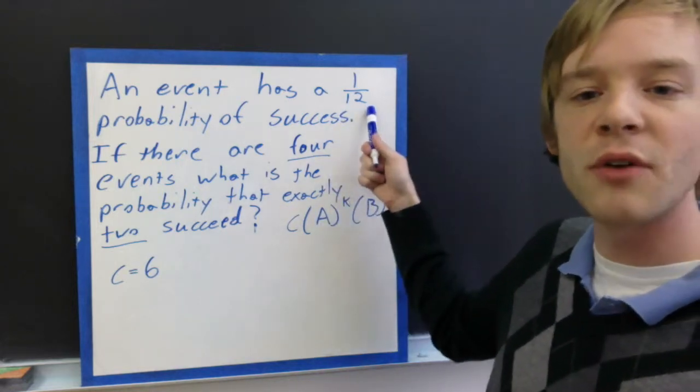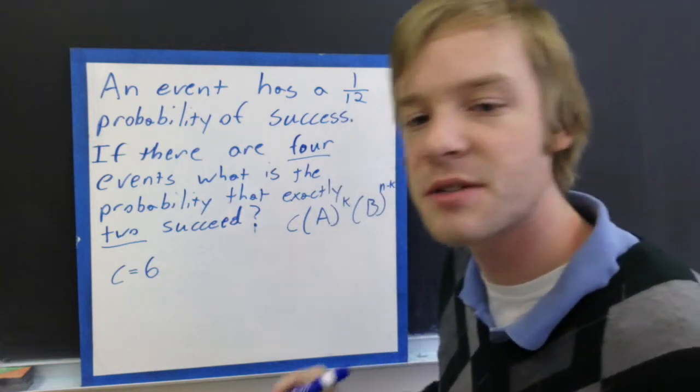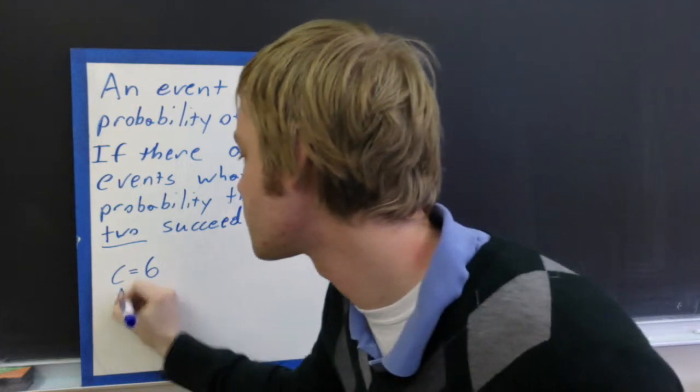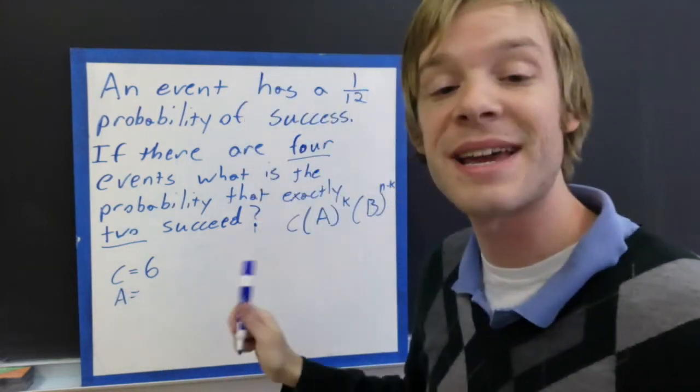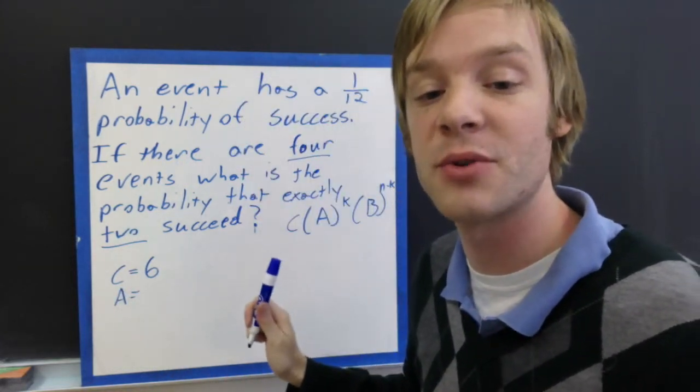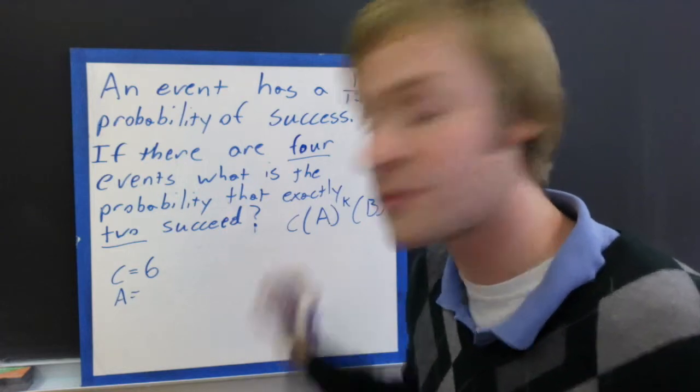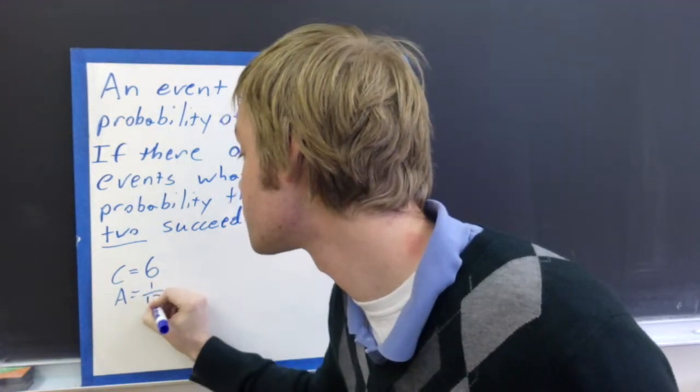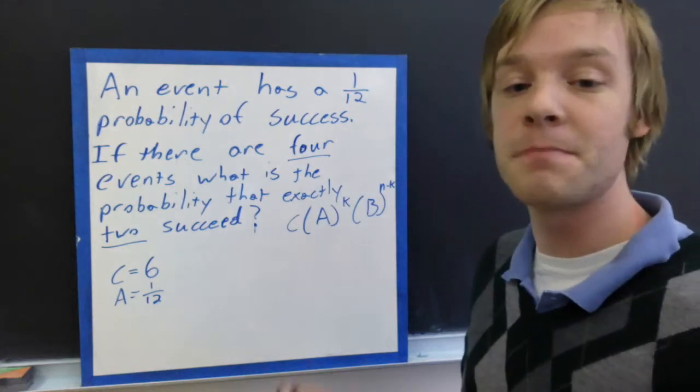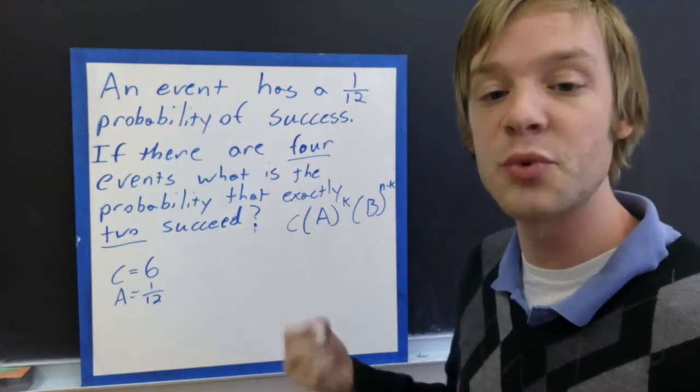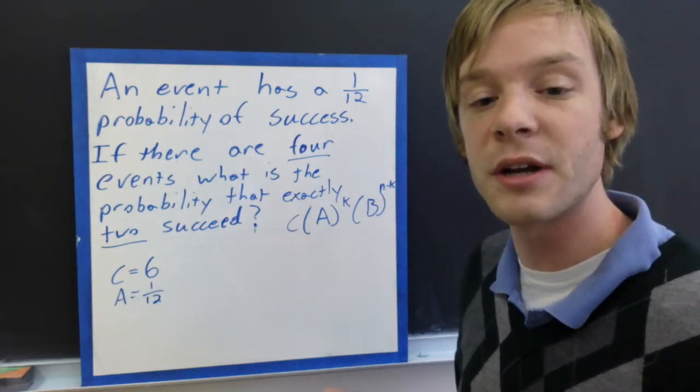We know that a is 12... Sorry, that's a is 1 over 12, not 12. a is 1 over 12. Which means that b is 11 over 12, because if we do 1 minus 1 over 12, we get 11 over 12.